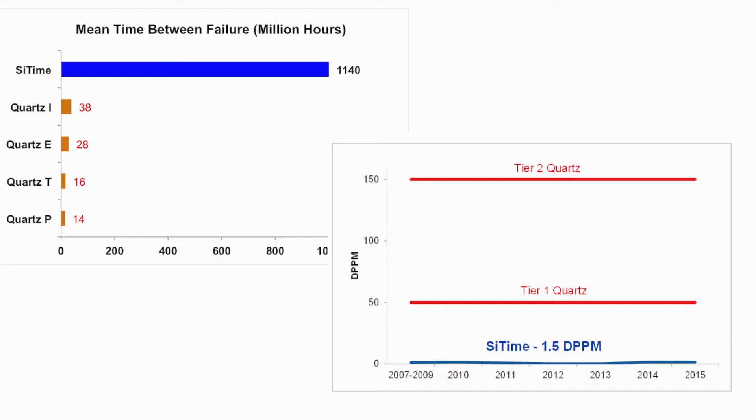Reason number two: MEMS oscillators offer much better quality and reliability. Quality is very important — company reputations are at stake and rework can be costly and time consuming. Moreover, systems deployed outdoors and exposed to environmental stresses must be especially robust. Quartz resonators, while a mature technology, involve a rather complicated manufacturing process in which each individual resonator is tuned to the desired frequency, usually by ablating the metal electrode with an ion beam. This process, which occurs before the crystal is encapsulated, is susceptible to contamination. Because of this process and other complexities with quartz manufacturing, the mean time between failures of quartz can be as low as 14 to 38 million hours, with defective parts per million as high as 50 for the best quartz manufacturers and as high as 150 for tier-2 quartz suppliers.